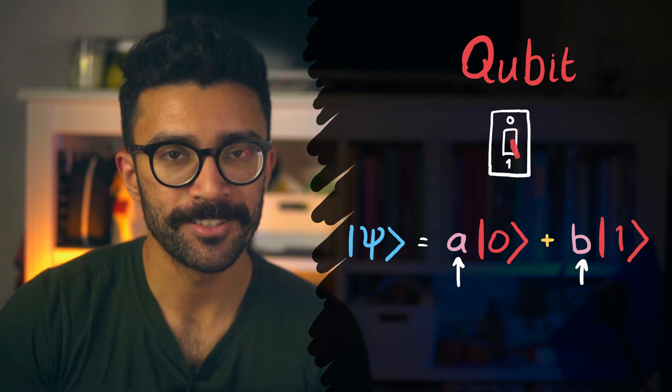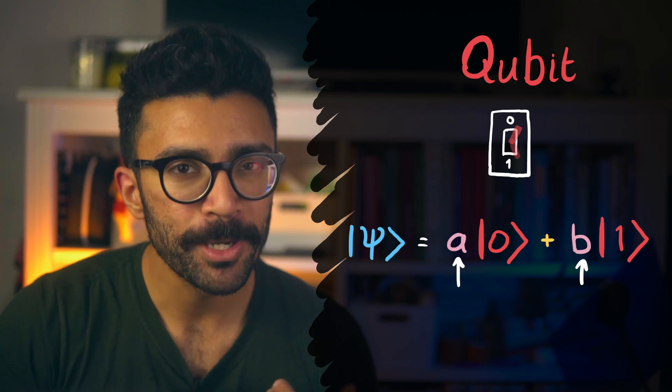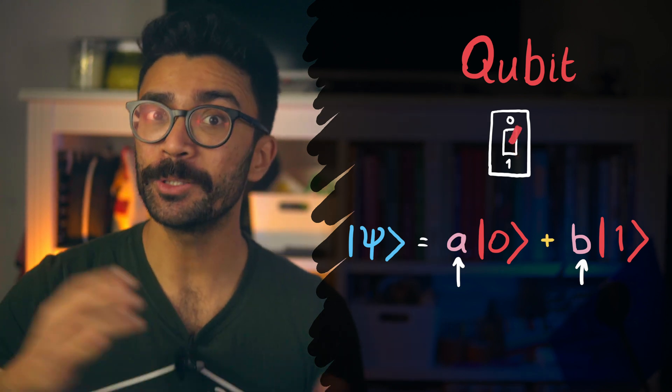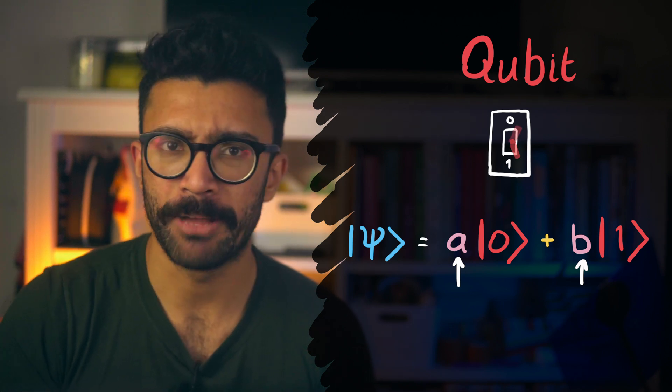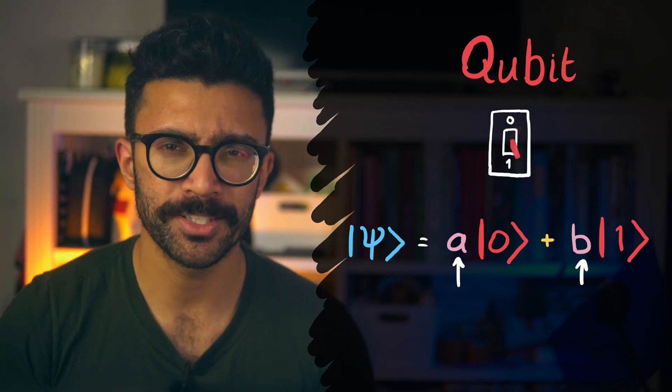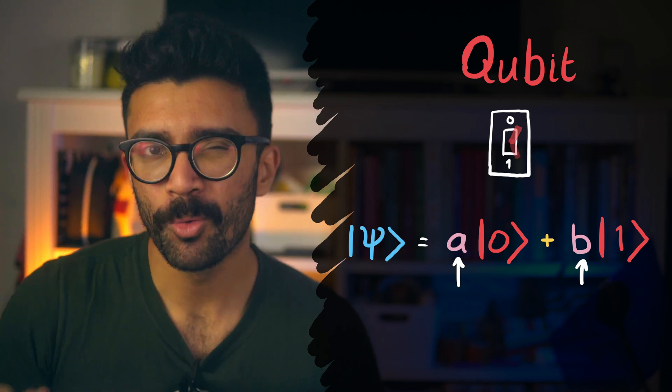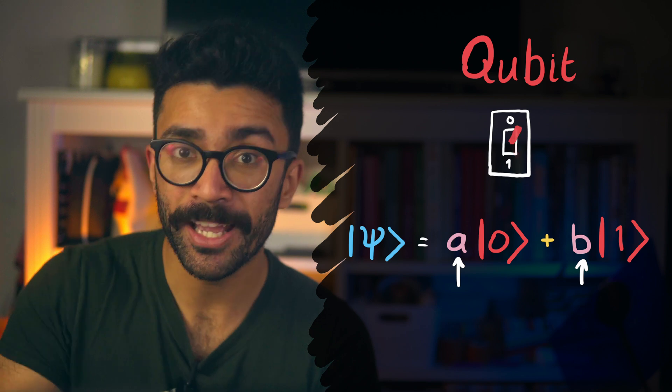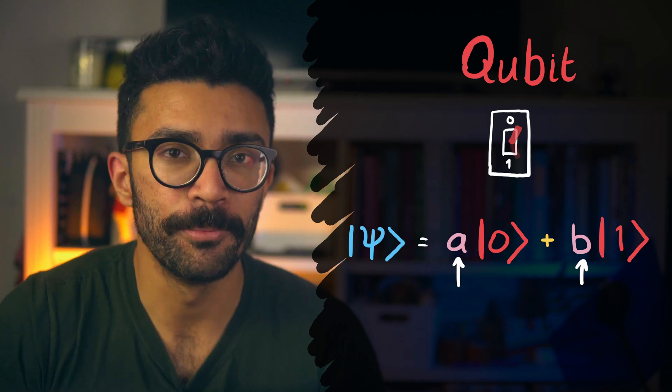Now, what we've talked about so far is quite theoretical and difficult to imagine in real life. And what I personally find helpful is to imagine a real system that behaves like this. It's all well and good thinking about some abstract system flowing between two states, or thinking about it as a combination of those two states. But what in real life actually behaves like this? Well, there are a few different ways to create qubits in real life, actually. Let's talk about a couple.